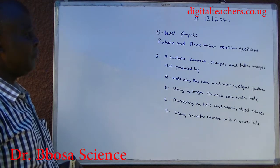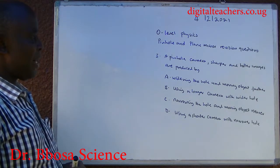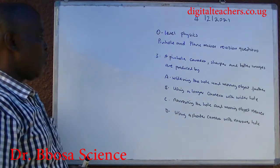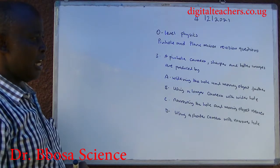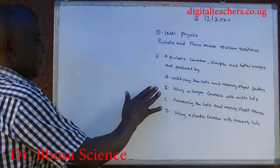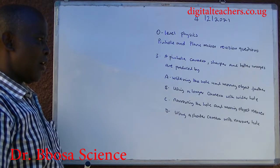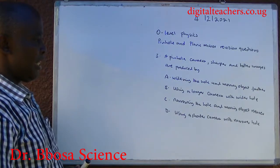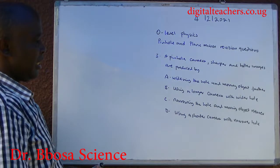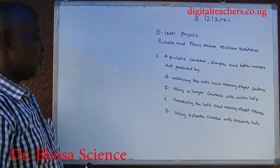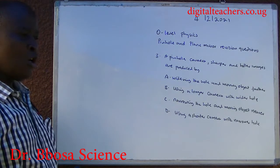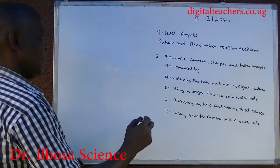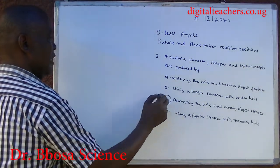Number three: a pinhole camera. Sharper and taller images are produced by A, widening the hole and moving the object further; B, using a longer camera with a wide hole; C, narrowing the hole and moving the object nearer; D, using a shorter camera with a narrower hole. You can pause and answer. The answer is C.